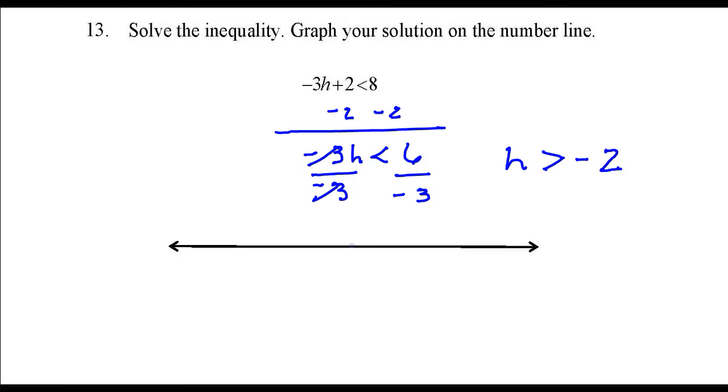So let's go ahead and graph that on the number line. We'll put 0 in the middle. The solution is all numbers greater than negative 2.